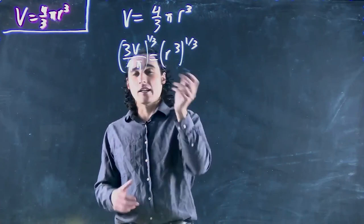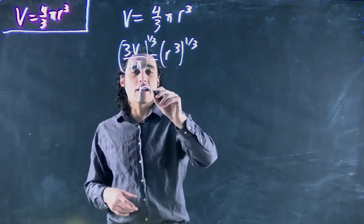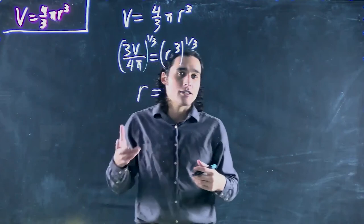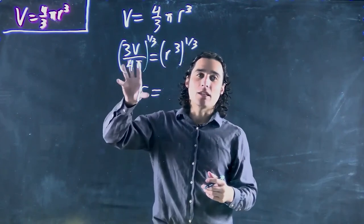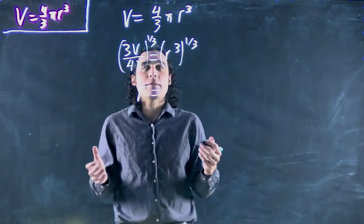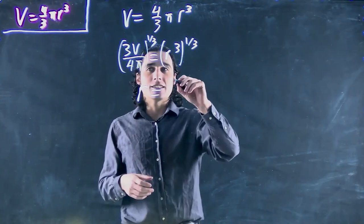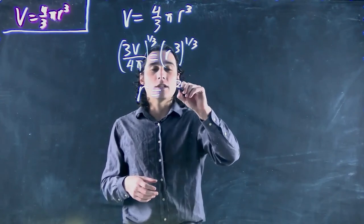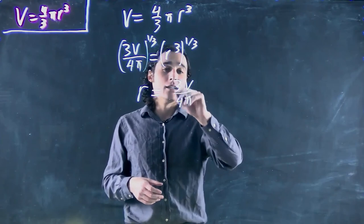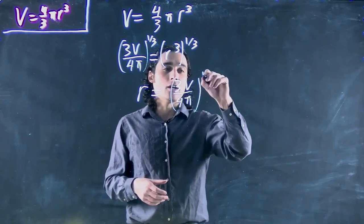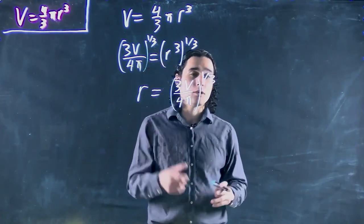And therefore I can even flip it and write r on the other side if I want. It doesn't matter which side the r is on. Conventionally people put this on the left side. But we can just simply say r equals 3V over 4 pi to the power of 1 over 3. Our answer depends on whatever our variables happen to be, and we'd be all done.